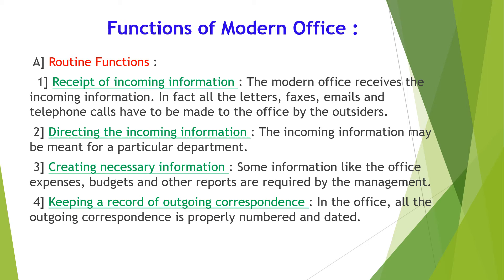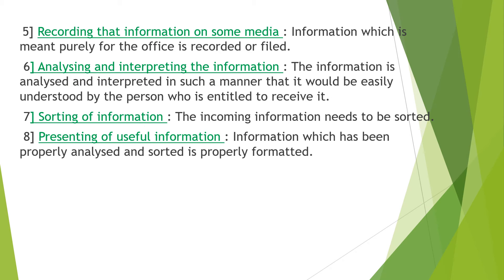The next function is keeping a record of outgoing correspondence. In the office, all outgoing correspondence is properly numbered and dated. A separate record register where the entire details of outgoing records are maintained is kept by an office clerk. The next function is recording information on some media. Information which is meant purely for the office is recorded or filed. Information may be stored as a hard copy on paper or as a soft copy on electronic media.